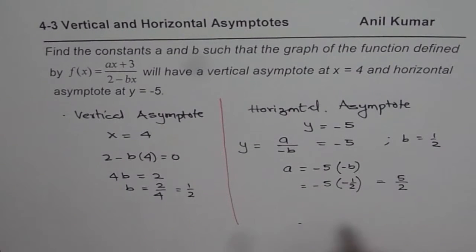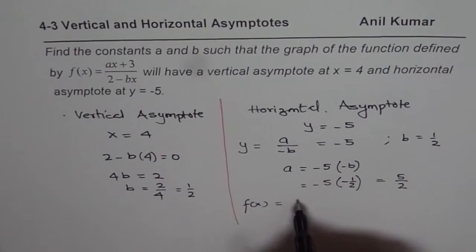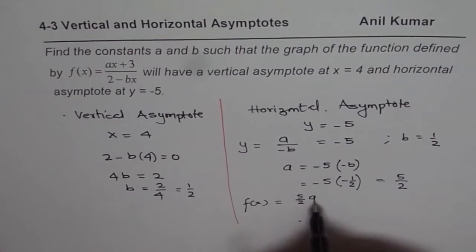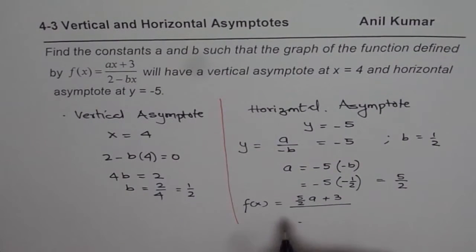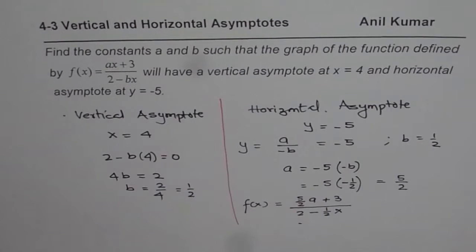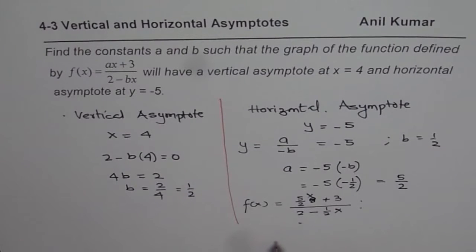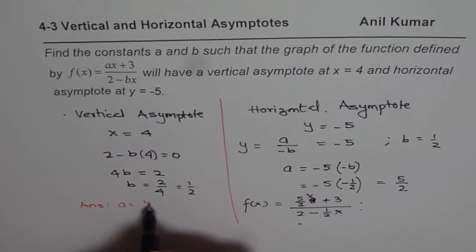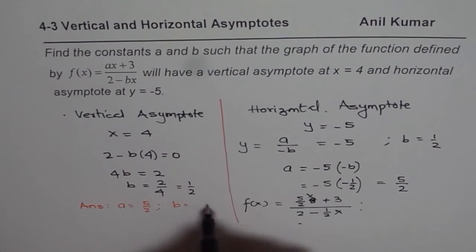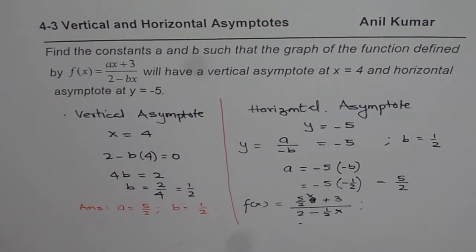So we can write f(x) as 5 over 2 times x plus 3, divided by 2 minus one half times x. We found both constants: a equals 5 over 2 or 2.5, and b equals one half. That is how you find the solution for this problem. I hope that helps — thank you and all the best.